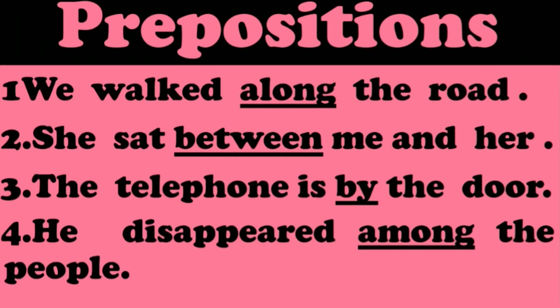Next we see related examples of prepositions. First: we walked along the road. Second: she sat between me and her — between two people or two things. Third: the telephone is by the door. Fourth: he disappeared among the people — among means more than two, it may be three or four.